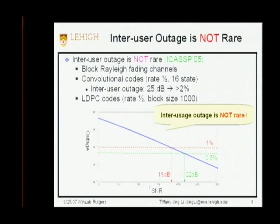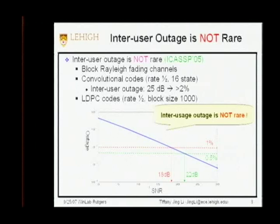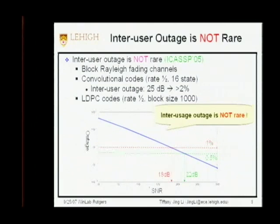We did some analysis on this. We found that inter-user outage is not really that rare, and we cannot safely ignore it. We checked convolutional codes with block-really fading — a 16-state rate-1/2 convolutional code shows inter-user outage more than 2%, even at 25 dB SNR. We tested a stronger code, an LDPC code, rate 1/2, block size 1000: at 18 dB still 1%, at 22 dB about 0.5%. The curve shows not much diversity because of block fading. Anything in the range of 10^-2 is considered very high in a communication scenario.